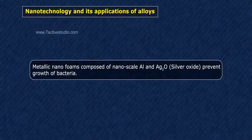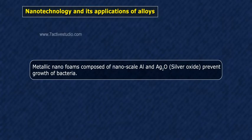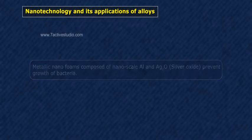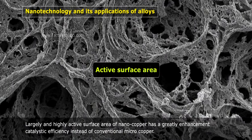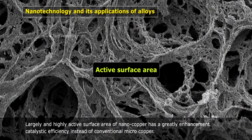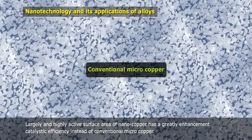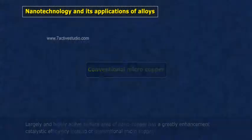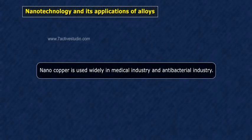Metallic nanofoams composed of nanoscale Al and Ag2O (silver oxide) prevent growth of bacteria. The largely and highly active surface area of nanocopper greatly enhances catalytic efficiency compared to conventional microcopper. Nanocopper is used widely in the medical industry and antibacterial industry.